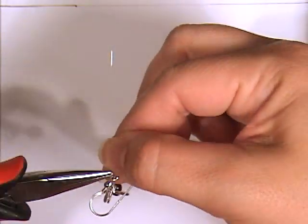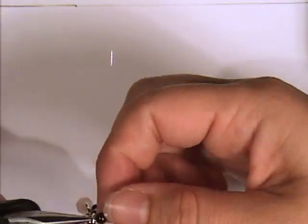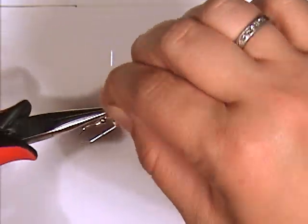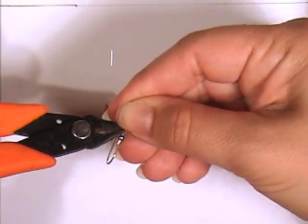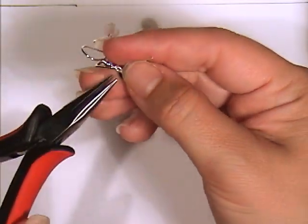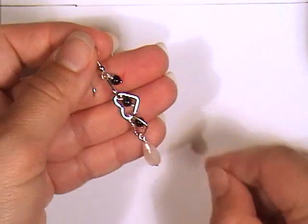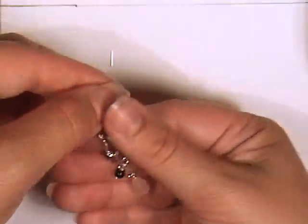Go ahead, take your chain nose pliers, and then give the excess a wrap, flush cutters, snip off the end, take your chain nose pliers, tuck in, and there we go.